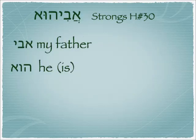The second son is Abihu, which is made up of two words: Avi, meaning 'my father,' and Hu. So we can say it means 'he is my father.'